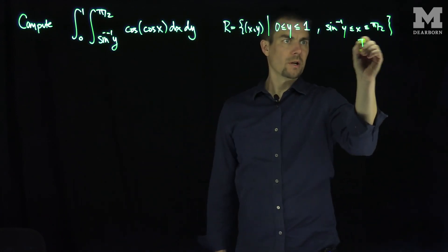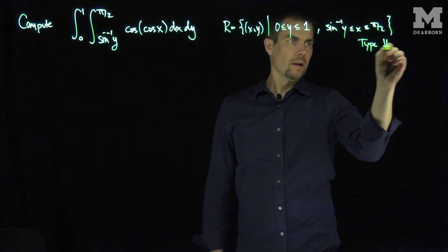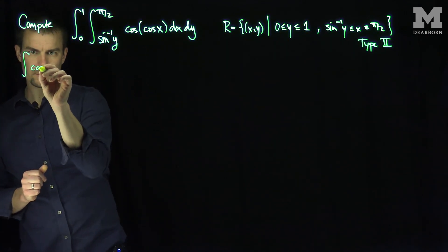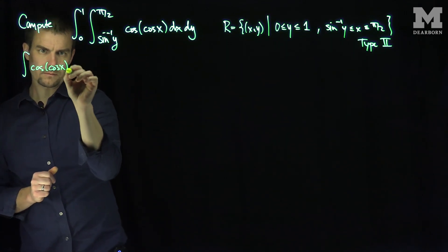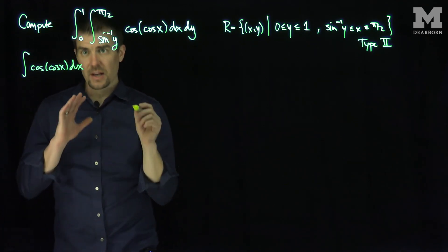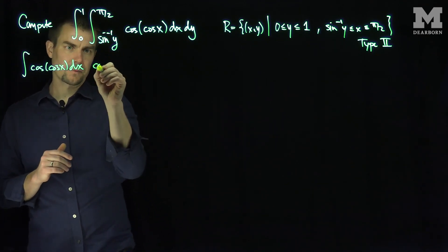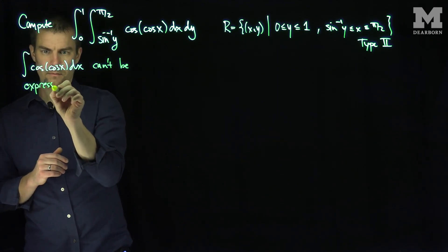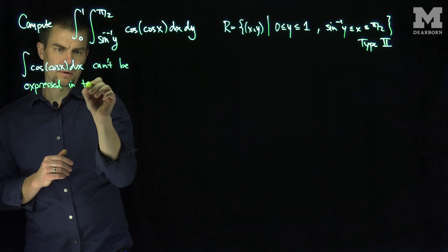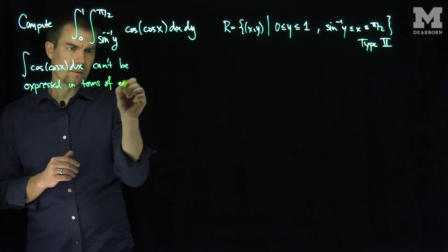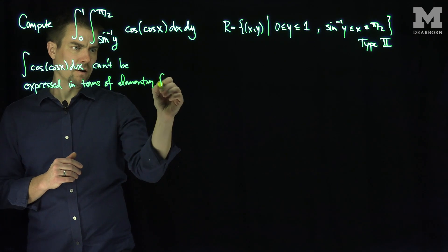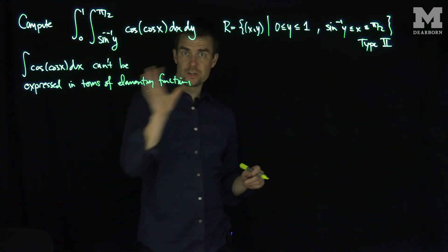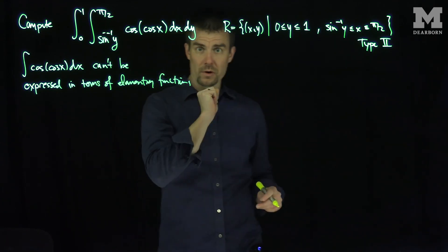This is a type 2 region, and the antiderivative of cosine of cosine of x cannot be expressed in terms of elementary functions. So I'll try to change these limits of integration to make it a type 1 region.